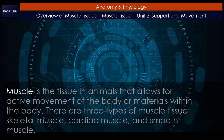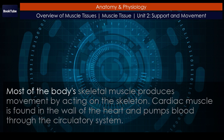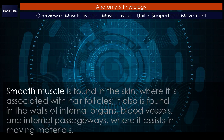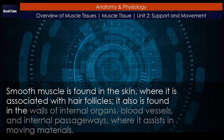Chapter Review: Muscle is the tissue in animals that allows for active movement of the body or materials within the body. There are three types of muscle tissue: skeletal muscle, cardiac muscle, and smooth muscle. Most of the body's skeletal muscle produces movement by acting on the skeleton. Cardiac muscle is found in the wall of the heart and pumps blood through the circulatory system. Smooth muscle is found in the skin, where it is associated with hair follicles. It also is found in the walls of internal organs, blood vessels, and internal passageways, where it assists in moving materials.